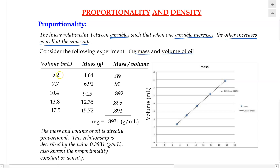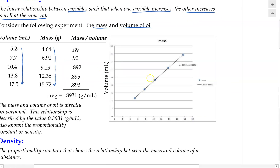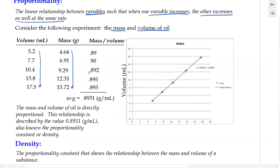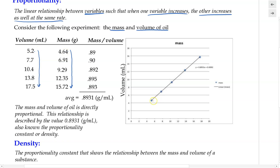When we take different volumes of oil and measure its mass — for example, 5.2 mL of oil would weigh 4.64 grams — and as we increase the volume by adding more oil and further measure its mass, we can see that as we increase the volume, the mass also increases. Volume and mass of the oil are proportional to each other, and we can see this linear relationship by looking at the graph — plotting each data point shows that as volume goes up, mass goes up linearly.